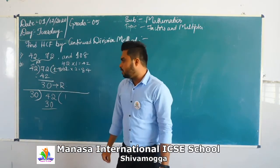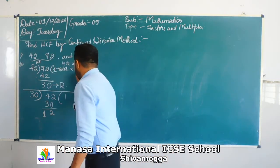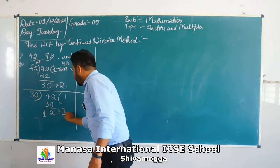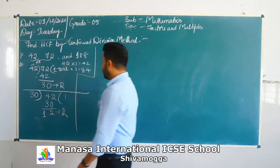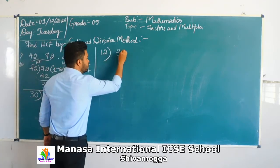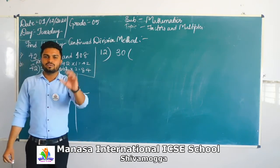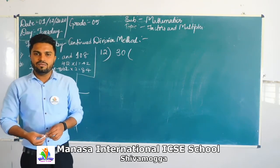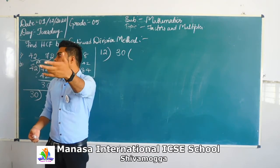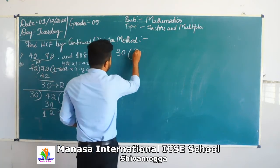Now you have remainder 12 and divisor 30. 12 ones are 12. 12 twos are 24. 12 threes are 36. We have 30, so we need a number less than or equal to 30. 12 twos are 24 — take that. Now subtraction: 30 minus 24 gives remainder 6.